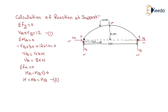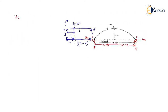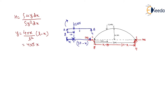We assume HA equals HB equals H as the redundant force. H can be computed directly by the equation H equals the integral of mu·Y·dX divided by the integral of Y²·dX. The equation of the parabola is Y equals 4R·X divided by L² into (L minus X). Substituting R equals 5 meters and L equals 30 meters, we get Y equals X/45 into (30 minus X).